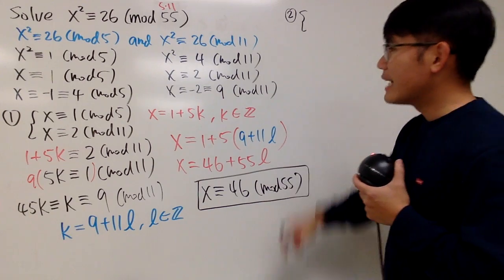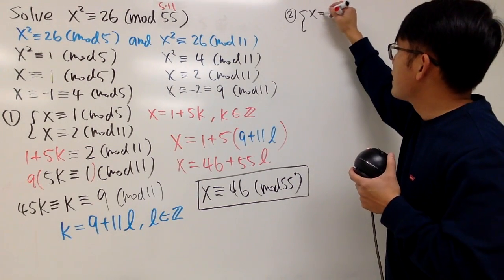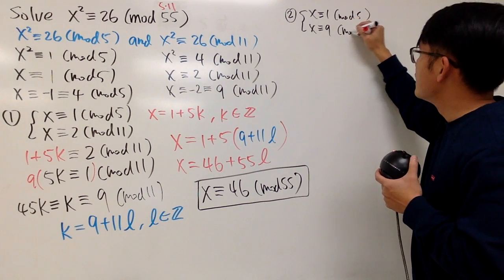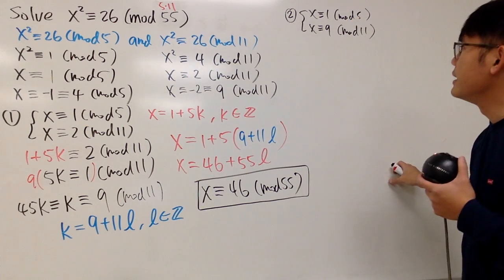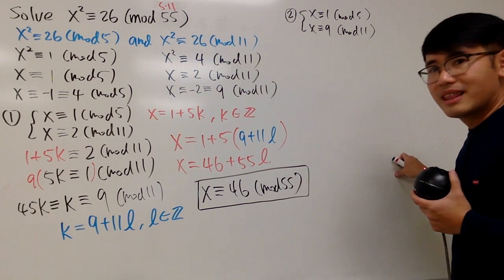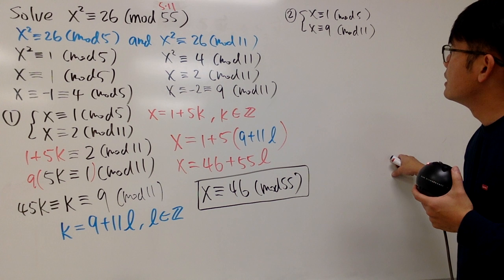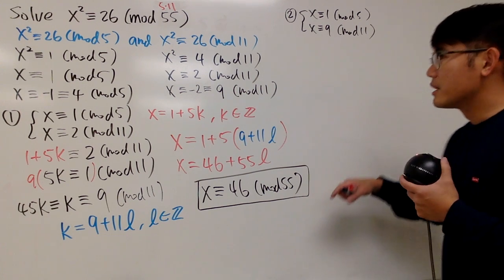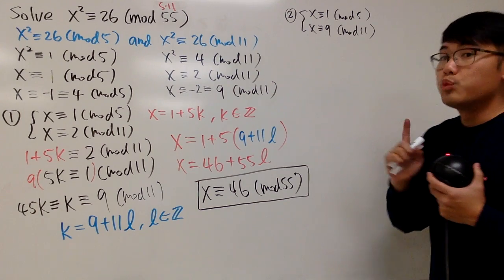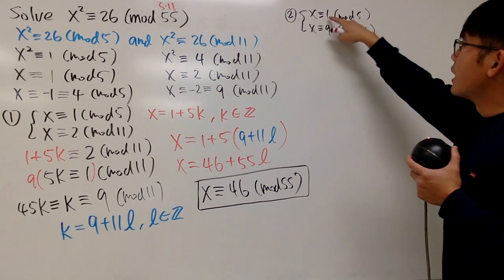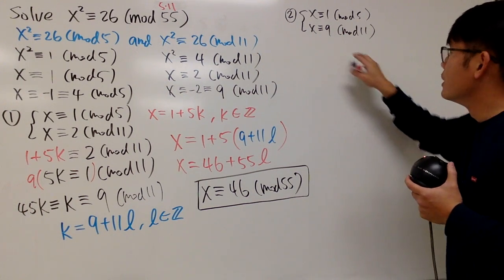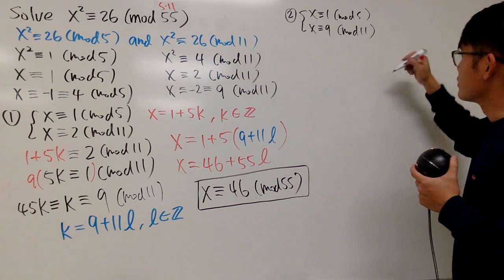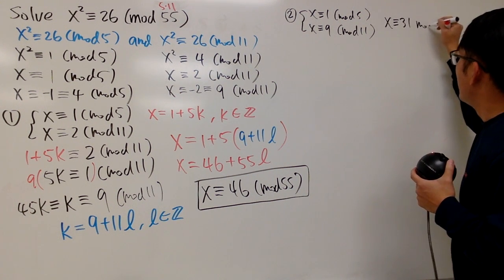The second situation pairs x congruent to 1 mod 5 with x congruent to 9 mod 11. You can do all that algebra again, or just think about it. 31 works — because 31 is congruent to 1 mod 5, and 31 is congruent to negative 2 mod 11, which is the same as 9. So the answer for this system is x congruent to 31 mod 55.